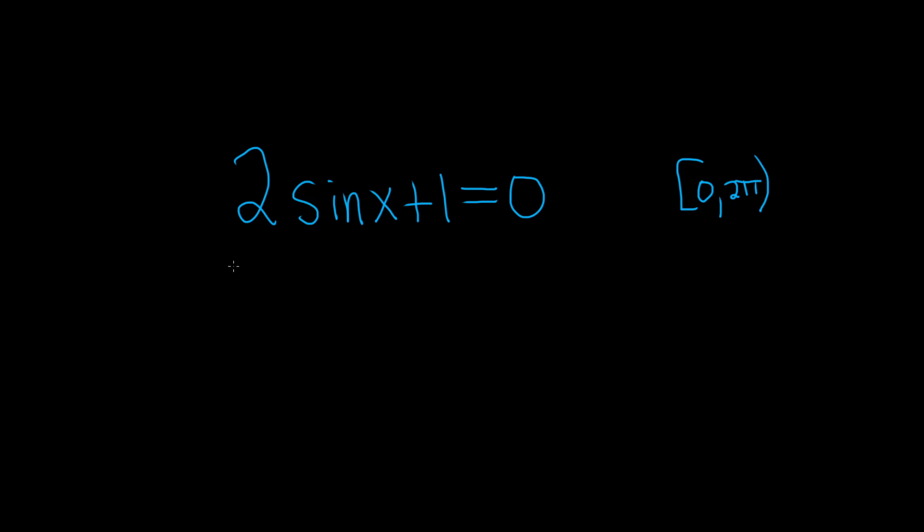In this problem, we have to solve this trigonometric equation: 2 sin x + 1 = 0, where x is between 0 and 2π.